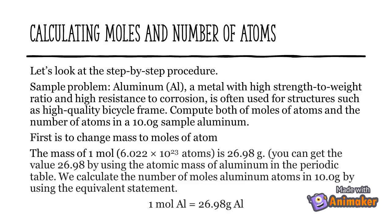First, change mass to moles of atoms. The mass of one mole — 6.022 × 10²³ atoms — is 26.98 grams. You can get the value 26.98 by using the atomic mass of aluminum in the periodic table. We calculate the number of moles of aluminum atoms in 10.0 grams using the equivalent statement: one mole of aluminum is equal to 26.98 grams of aluminum.